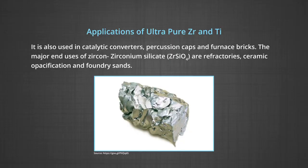Applications of ultra pure zirconium and titanium. Zirconium is used as an alloy, such as zircaloy, which is used in nuclear applications, since it does not readily absorb neutrons. It is also used in catalytic converters, percussion caps and furnace bricks. The major end uses of zircon, zirconium silicate are refractories, ceramic opacification and foundry sands.